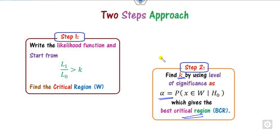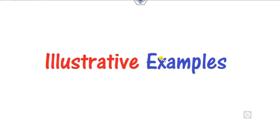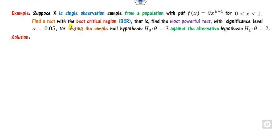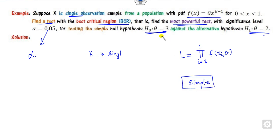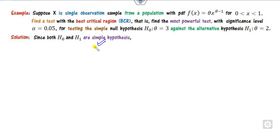Let us see how to solve various examples. First, read the statement: x is a single observation, so when defining the likelihood function in step 1, i varies from 1 to 1. The PDF is given. Find the test using the best critical region — the most powerful test — with the given level of significance. H0 and H1 are given. First, verify whether the hypotheses are simple: both the null and alternative hypotheses are in equality form, so they are both simple. Therefore, you can apply the Neyman-Pearson lemma.